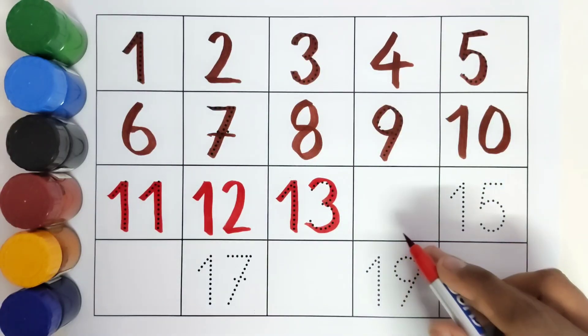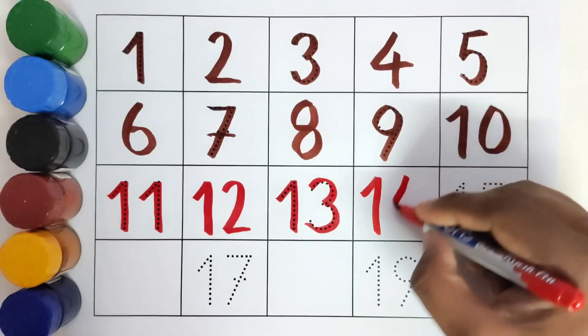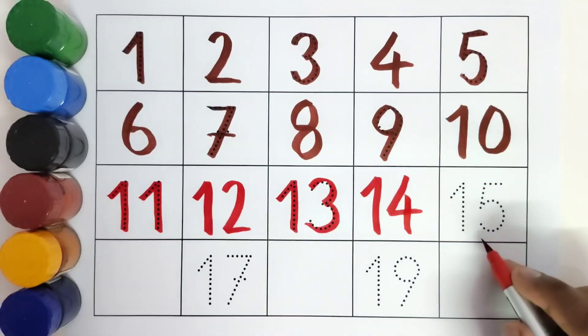What comes after thirteen? Fifteen. Fourteen. Fourteen. One, one, four, four. Fourteen. Fourteen.